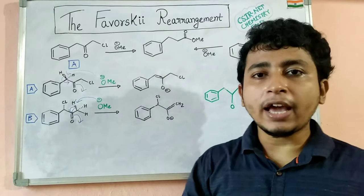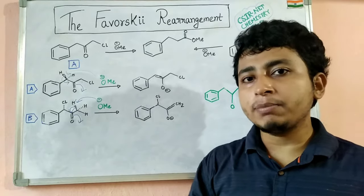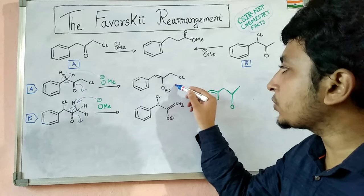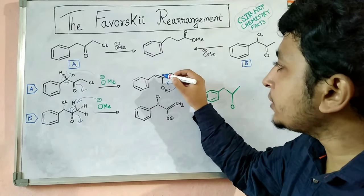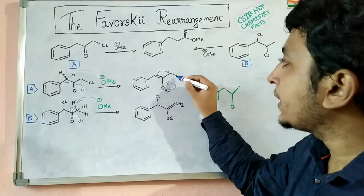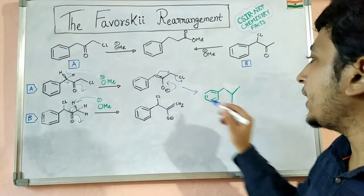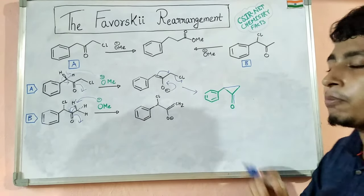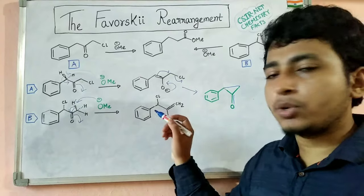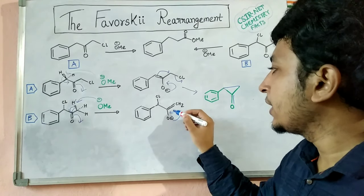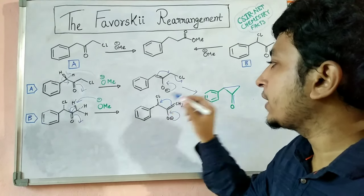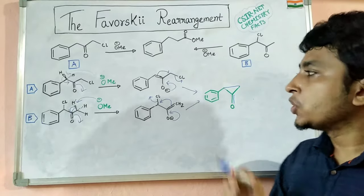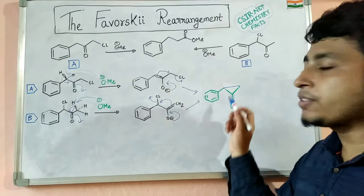These two enolates have different structures, but after the reaction they give the same intermediate. The negative charge will come here, this bond will open up, it can attack here, and the Cl⁻ can leave. So a three-membered cyclic ketone intermediate — a cyclopropanone intermediate — will form. In the case of compound B also, the same thing happens: the negative charge comes here, this bond opens up, it attacks here, and Cl⁻ leaves. In both cases, the same intermediate forms.